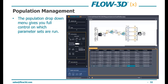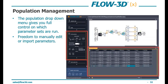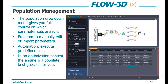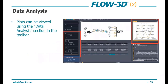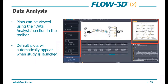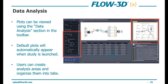The population drop-down menu gives you full control on which parameters are set to run. You have freedom to manually edit or import parameters into this section. If you're doing an automation, you can execute this list as a predefined set. In an optimization context, the engine will populate this list with best guesses for you. The data analysis section allows plots to be viewed — default plots automatically appear once a study is launched, and users can create as many data analysis charts as they'd like across different tabs.